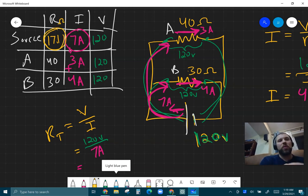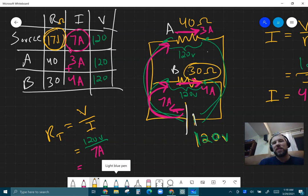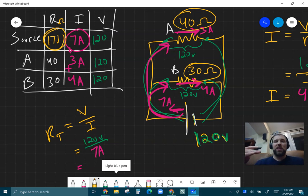And if you notice, that total resistance is less than either one of these. And it should be. If we have more resistors in parallel, we're opening more doors.